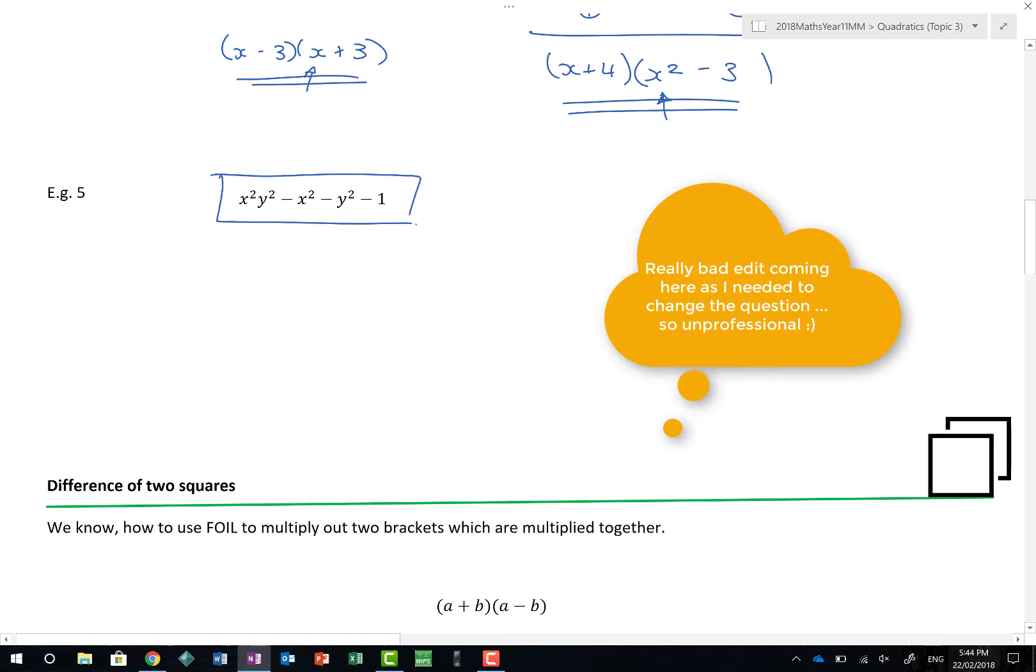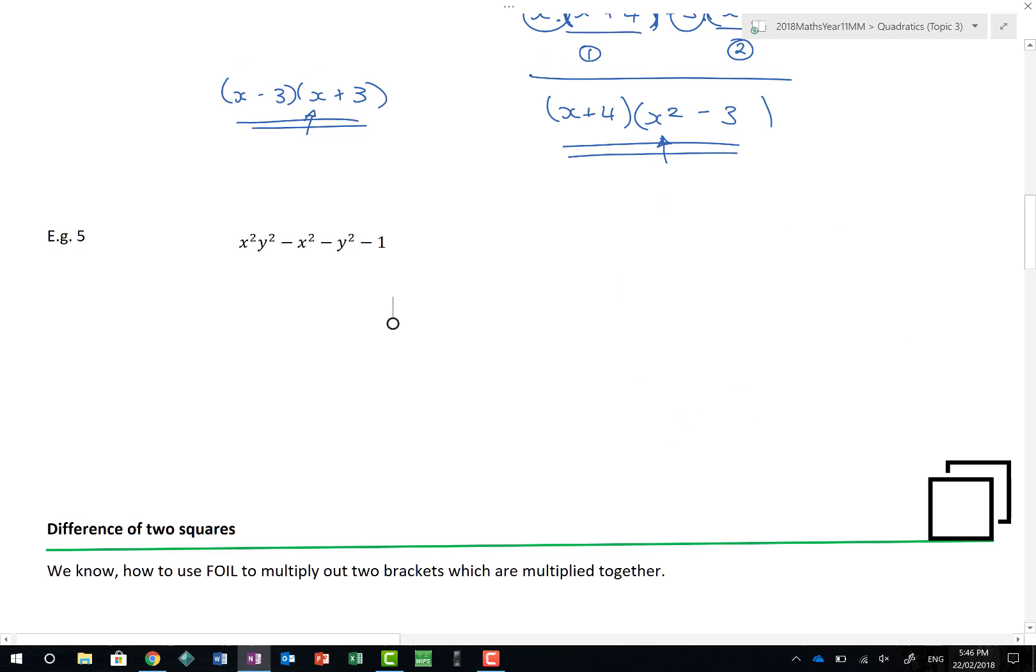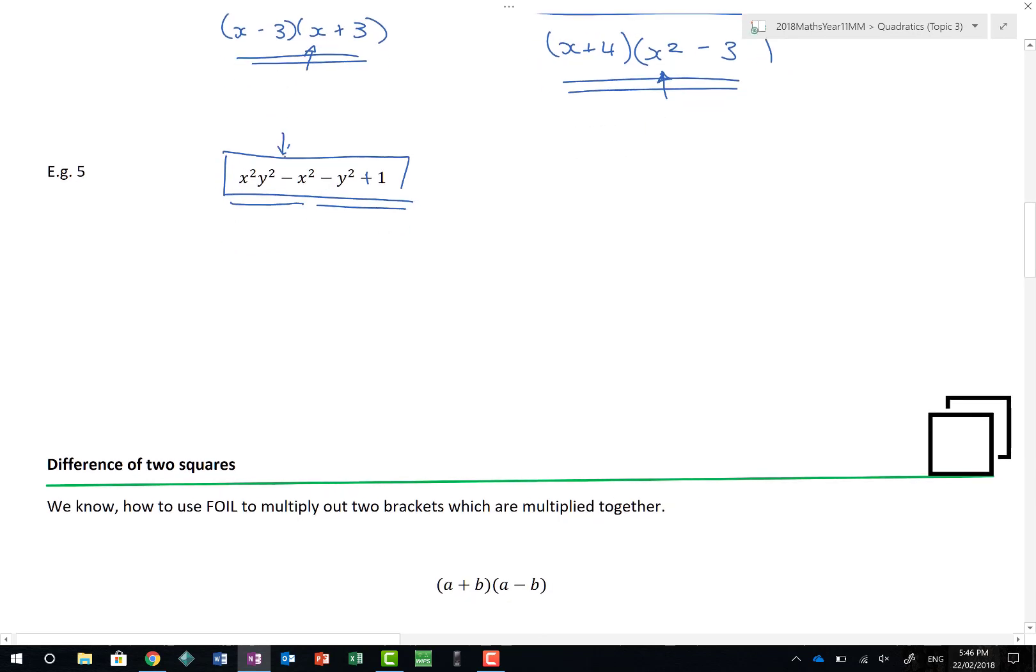One more example. This looks really complicated, but I promise you it isn't. I've noticed that this should be a positive. We've still got four terms, so I can factorise in terms of pairs. We notice that the first two terms have x squared, which means that's got to be a y squared, and that has to be minus 1. x squared times y squared gives me that term. x squared times minus 1 gives me that term.